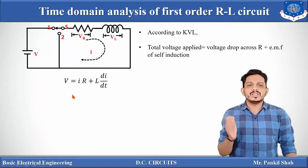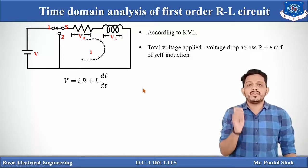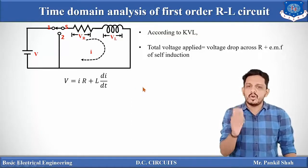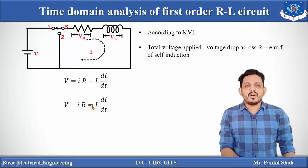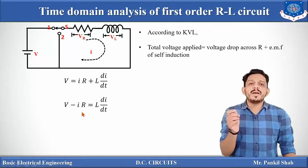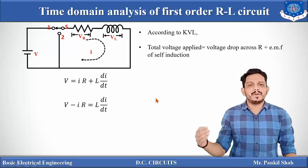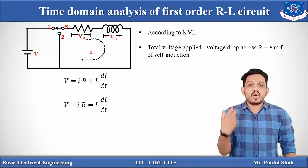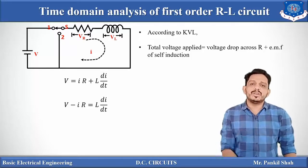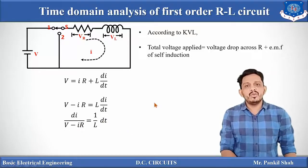So we get the equation: V = IR + L di/dt. Our aim is to find the equation of current i. This is a first-order differential equation. Taking IR to the left-hand side gives V − IR = L di/dt. Now we use the variable separable method — di should be on one side and dt on the other, so it becomes: di / (V − IR) = (1/L) dt.